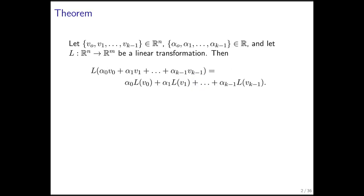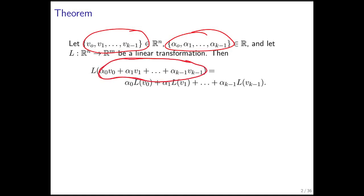It all starts with this theorem. The theorem says if we're given k vectors and k scalars, then if we take a linear combination of those vectors using those scalars and then apply a linear transformation to that, you get the same result as if you first applied the linear transformation and then took the linear combination of the result.